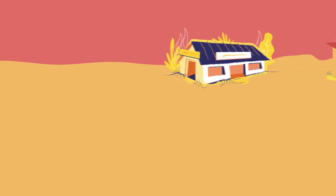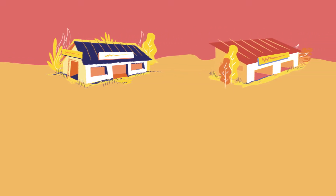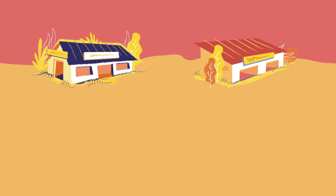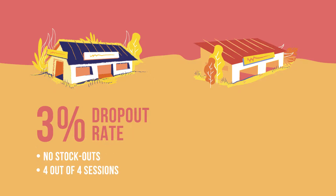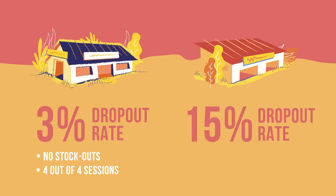Let us consider an example. Imagine you're a district manager looking at data for two health facilities. The first health facility has a 3% dropout rate, its refrigerator is permanently functioning at the right temperature, there are no stockouts of any vaccines, and it has completed four out of its four planned outreach immunization sessions. The second facility has a 15% dropout rate, and its vaccine refrigerator has had six alarms this month. If you had to choose only one of these health facilities to prioritize for supervision, which would it be?